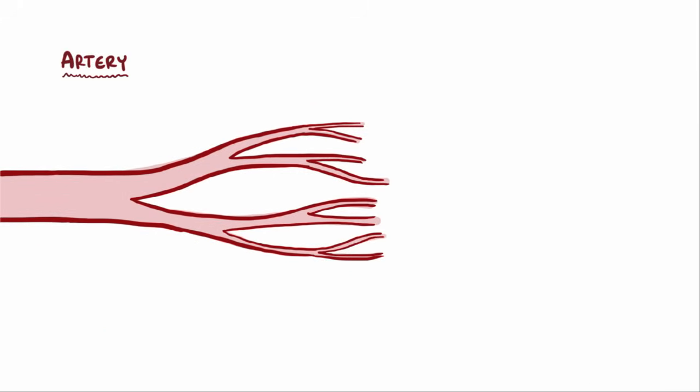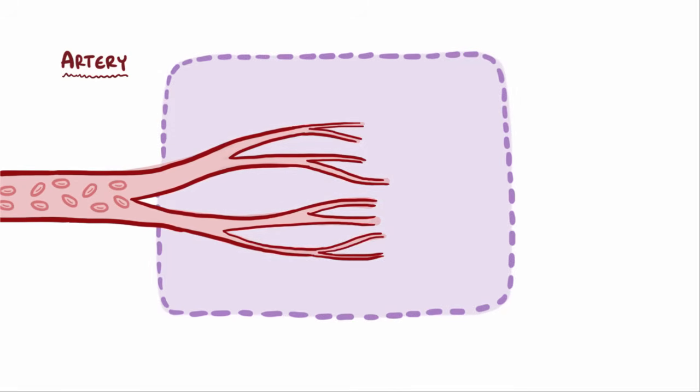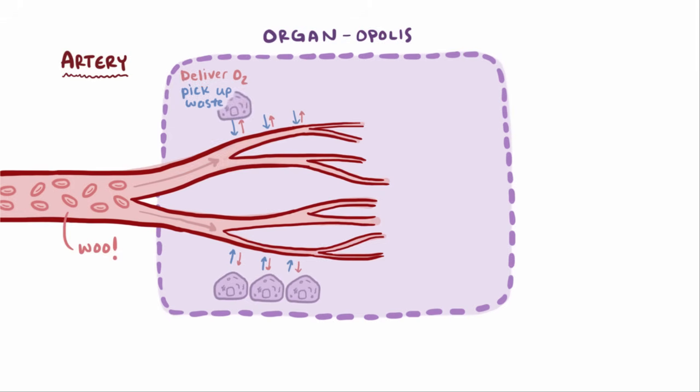Let's say this is your artery, like the one-way highway leading red blood cells into the city, which is like a major organ - Organopolis. These red blood cells drive around the capillaries, like smaller city streets, and supply the city with fresh oxygen and pick up waste.